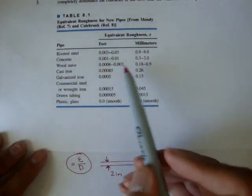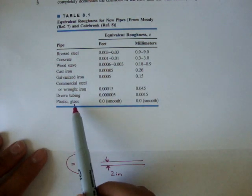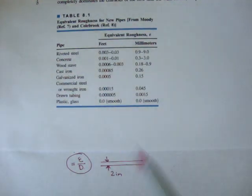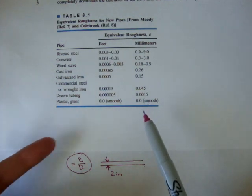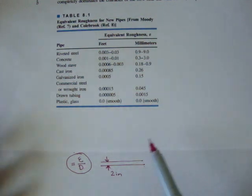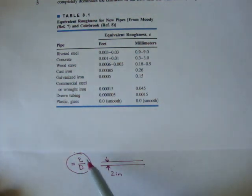You'll notice at the very bottom we have plastic and glass. Now, I'm using the Munson 6th edition Fundamentals of Fluid Mechanics book. This is the chart given in that book.